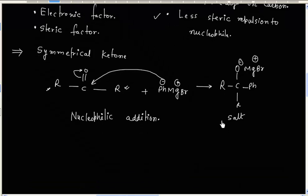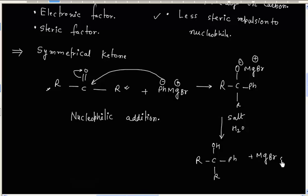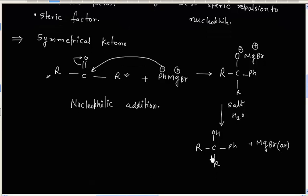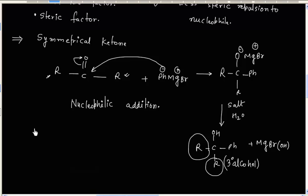In the next step, we can acidify this salt — for example with H2O — and we will finally get an alcohol as a product, along with an inorganic product. This alcohol is a tertiary alcohol. In the case of a symmetrical ketone with two identical R alkyl groups, the final product is a tertiary alcohol containing two same-kind alkyl groups.